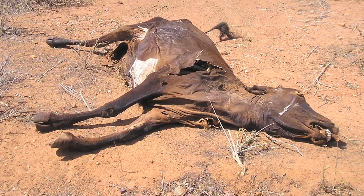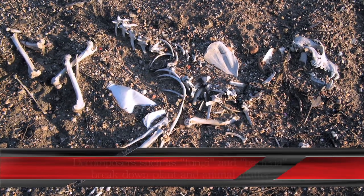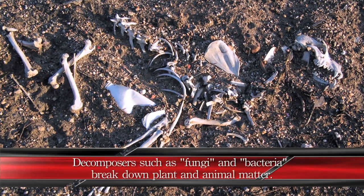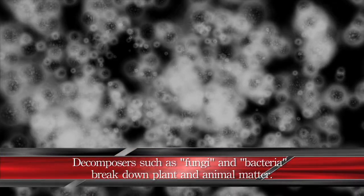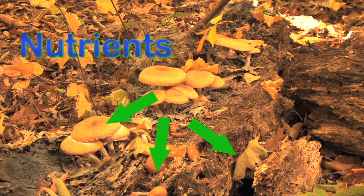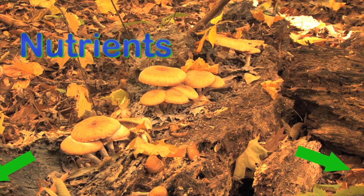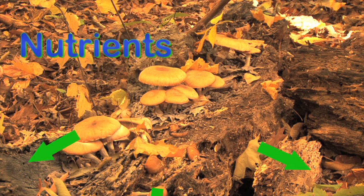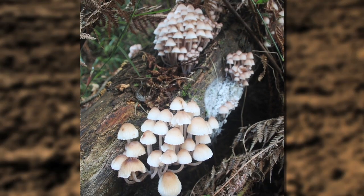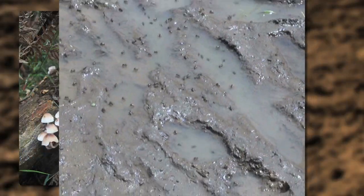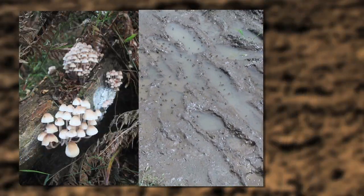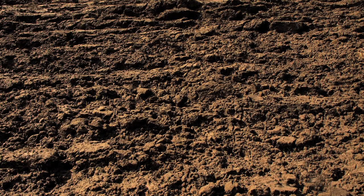When plants and animals die, their bodies are broken down by decomposers such as fungi and bacteria. These decomposers take the nutrients in the dead plant and animal matter and recycle it into the environment. The combination of nutrients recycled by the decomposers and the small pieces of rock left over by water runoff creates soil.